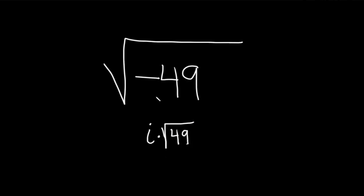So again, first step, whenever you see a negative here, it just becomes an i, and then you still have the square root of 49.